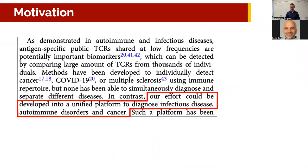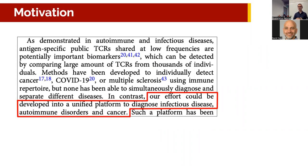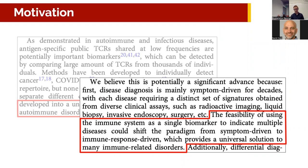Further in the discussion, they get into the best possible thing we could do with this. They talk about developing their system into a unified platform to diagnose infectious disease, autoimmune disorders, and cancers — basically treating how the immune system is reacting as a diagnostic tool. They go even further, saying they could potentially use the immune system as a single biomarker to indicate multiple diseases, shifting the paradigm of diagnosis from symptom-driven to immune-response-driven.